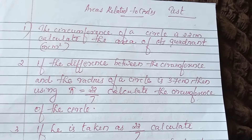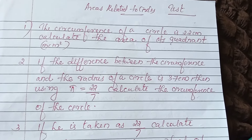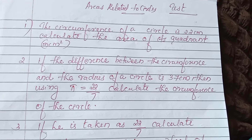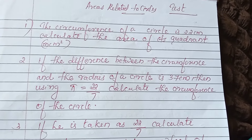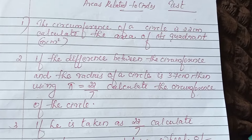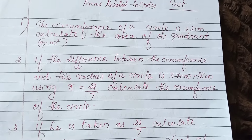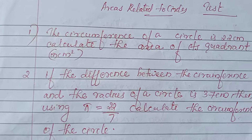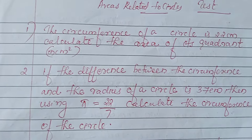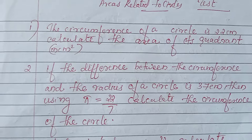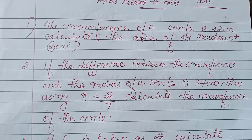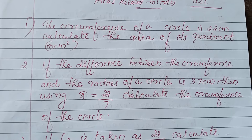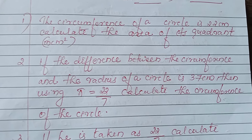Hi children, today we are going to discuss some important questions and areas related to circles. The first question: the circumference of a circle is 22 cm. Calculate the area of the quadrant.